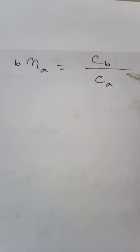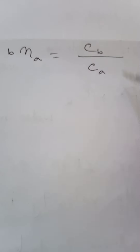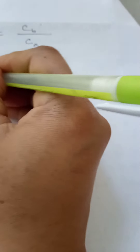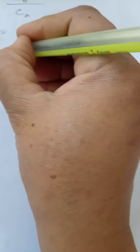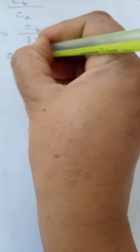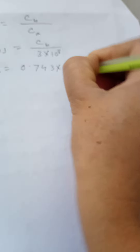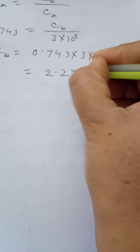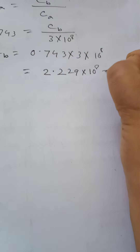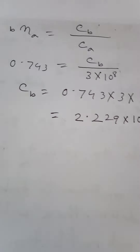bna can also be written in terms of velocity of light: bna = CB divided by CA — that is, velocity of light in medium B divided by velocity of light in medium A. So CB = 0.743 × 3 × 10⁸, which gives us CB = 2.229 × 10⁸ meters per second.